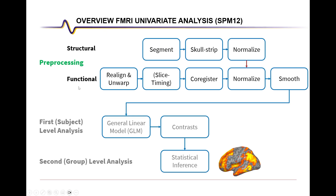For functional pre-processing, this involves realignment or motion correction, as well as distortion correction, also called unwarping. In SPM 12, it's possible to do both of these in one step called realign and unwarp. There's also the option to do slice timing correction, which is somewhat controversial, so you can choose whether to perform it or not. Then we will co-register the functional images onto the structural images to apply the normalization into MNI space, and finally perform smoothing as the last step of pre-processing.